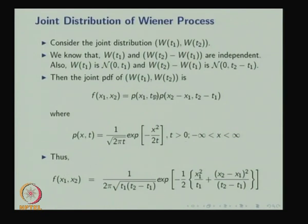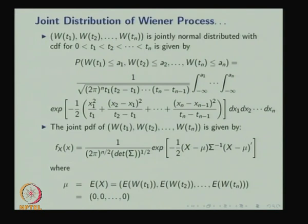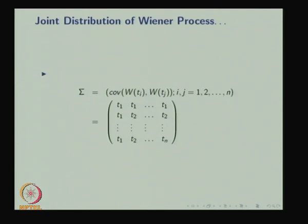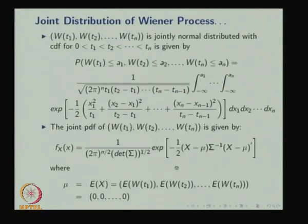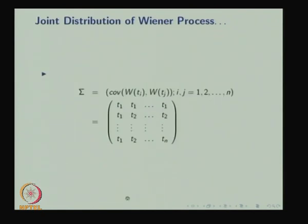The joint probability density function of W(t₁) and W(t₂) is: f(x₁, x₂) = (1 / (2π · √(t₁(t₂ − t₁)))) · exp(−expression), where the expression comes from the normal densities. Note that W(t₁) and W(t₂) are not independent, whereas W(t₁) and W(t₂) − W(t₁) are independent. The covariance matrix is symmetric with diagonal entries Var(W(tᵢ)) and off-diagonal entries Cov(W(tᵢ), W(tⱼ)) = min(tᵢ, tⱼ).